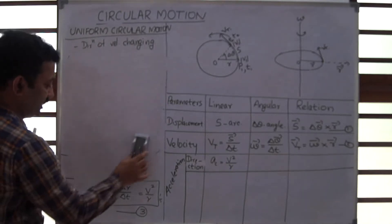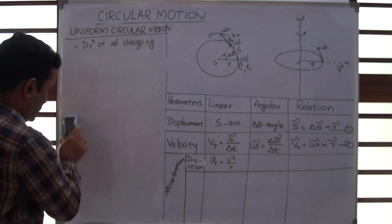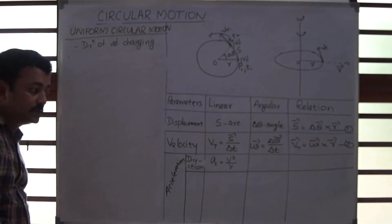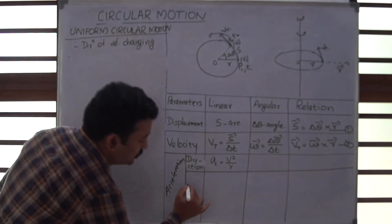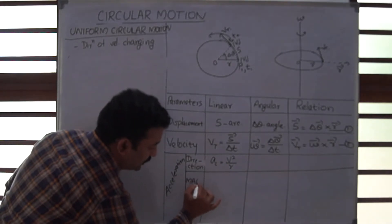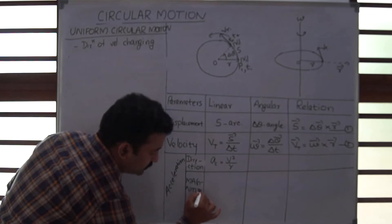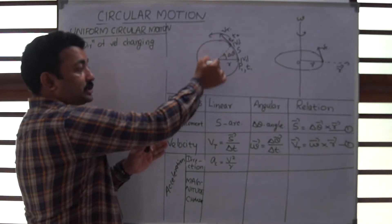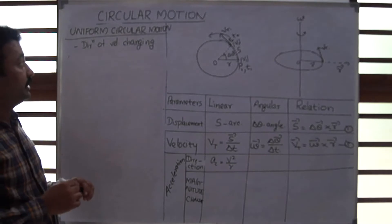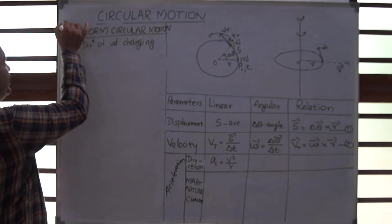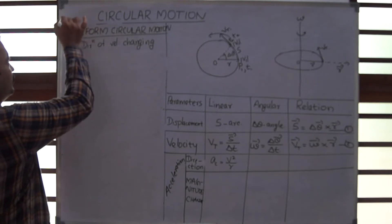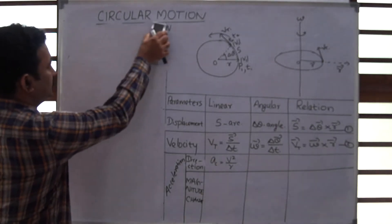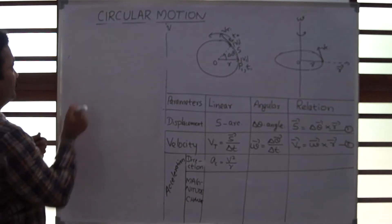The second possibility for a particle having acceleration is that the magnitude of velocity can change. At different points on the circle, the particle has different velocities — different tangential velocities. This concept moves us from the uniform to the non-uniform case. We are now going to study the aspects of non-uniform circular motion.